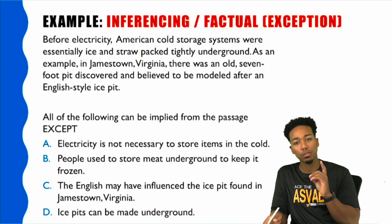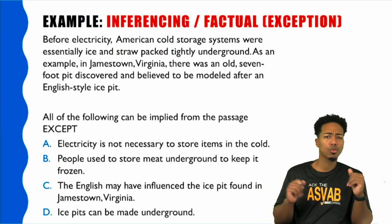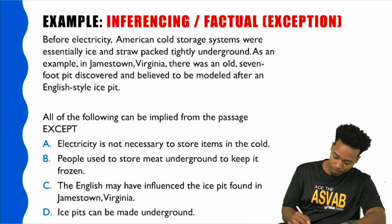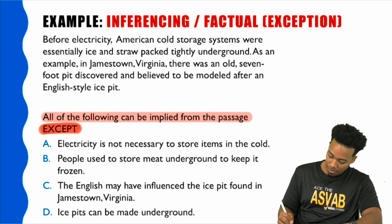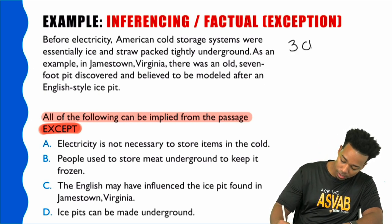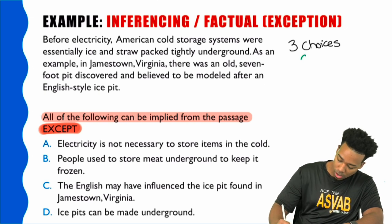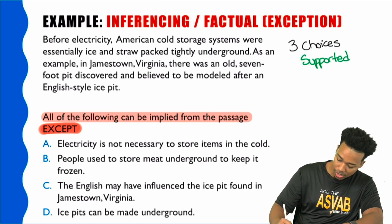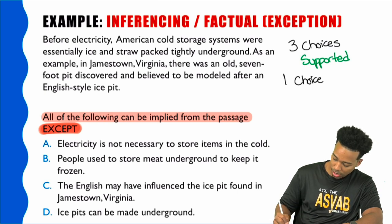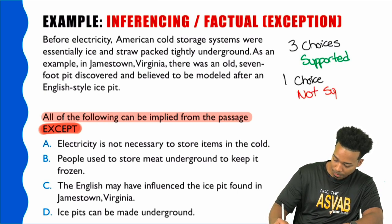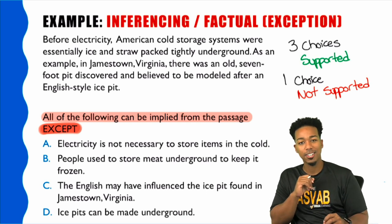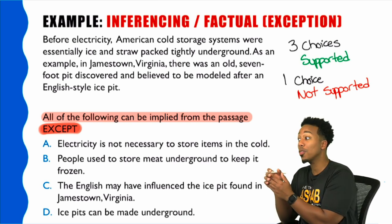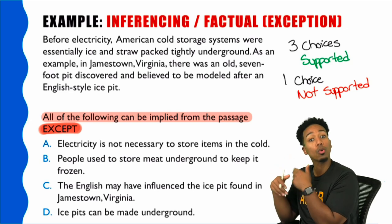Now let's look at an exception question — a variation of inferencing factual. The question reads: 'All of the following can be implied from the passage, EXCEPT...' This means three choices are supported by the passage and one is NOT. You need to find the choice that is not supported. When you see 'all of the following except,' find the one that's not true or not supported.